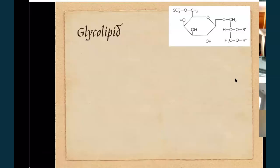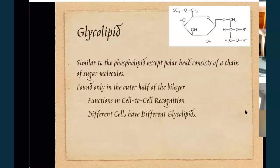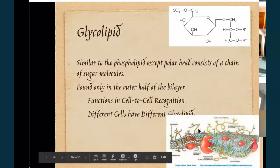Glycolipid — when you see 'glyco,' you're referring to sugars, so here's a sugar molecule attached to that hydrocarbon chain. Glycolipids are similar to phospholipids; however, they have sugar molecules instead of phosphates. We referred to the oligosaccharides last lecture — this is the one that is in the cell membrane and works for cell-to-cell communication. It helps your cells recognize what cell they are. So that's a glycolipid if it's attached to these lipids; it's a glycoprotein if it's attached to the protein.